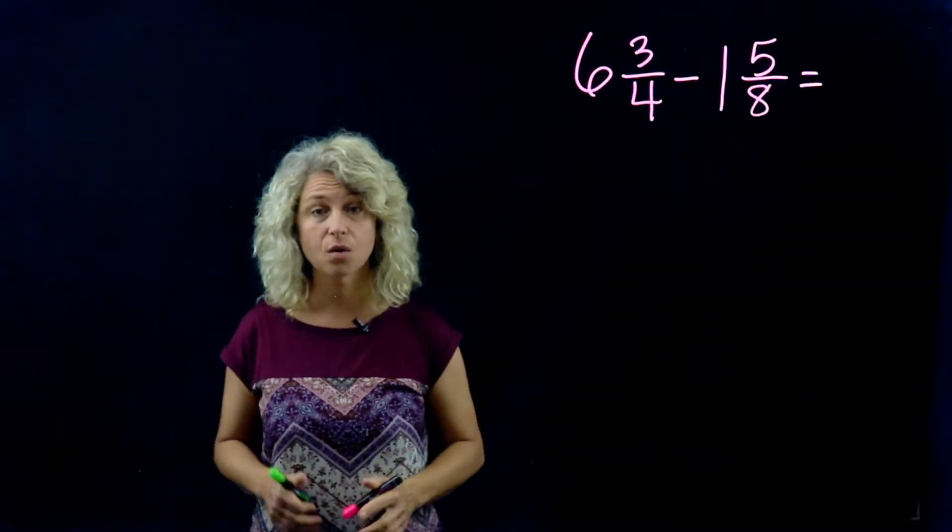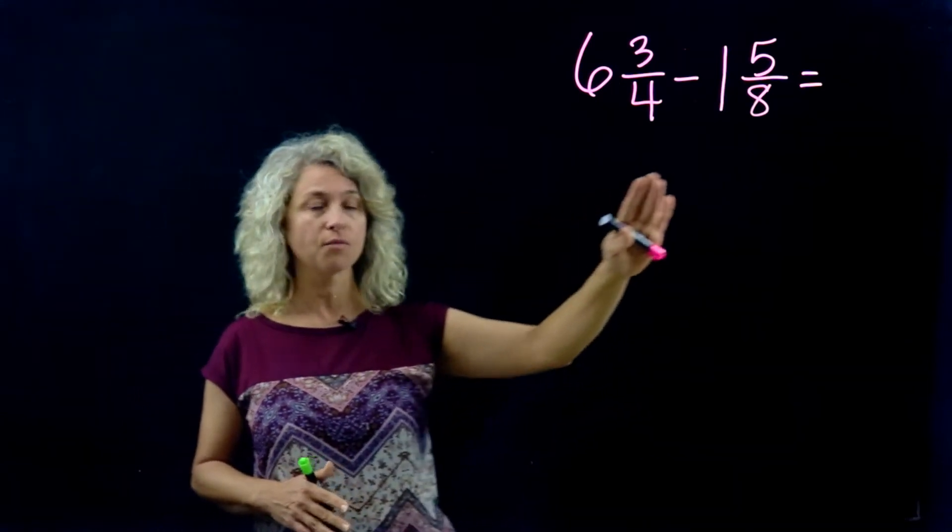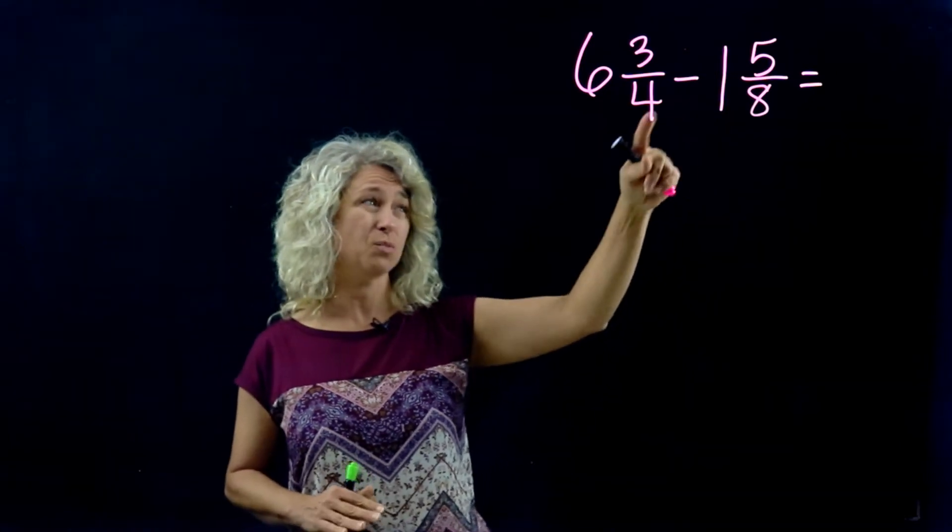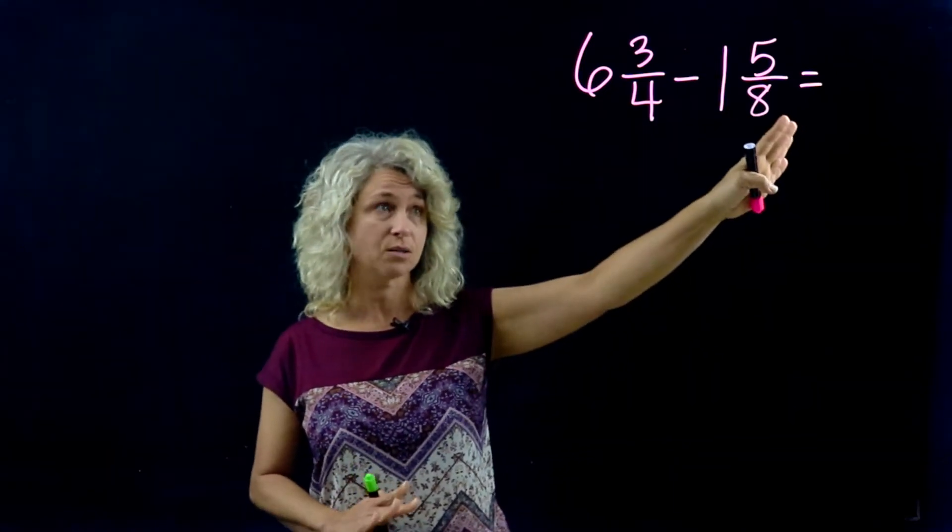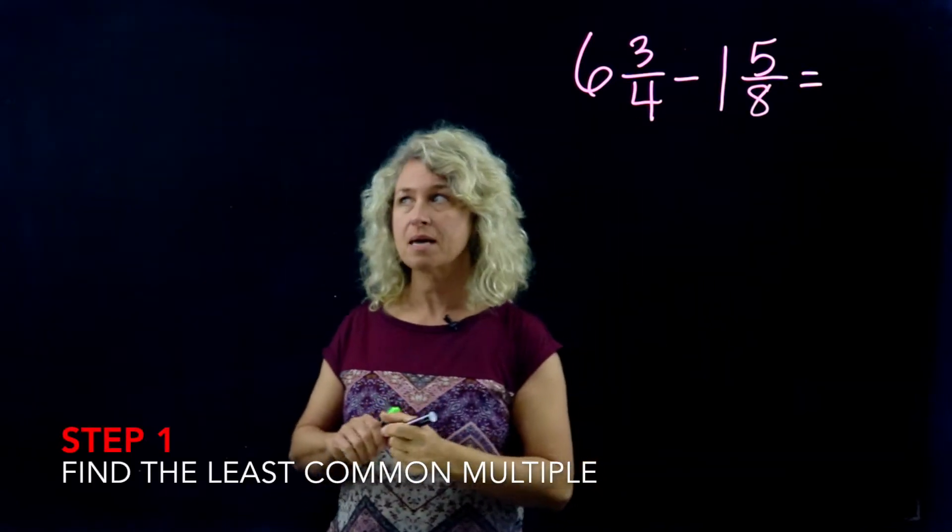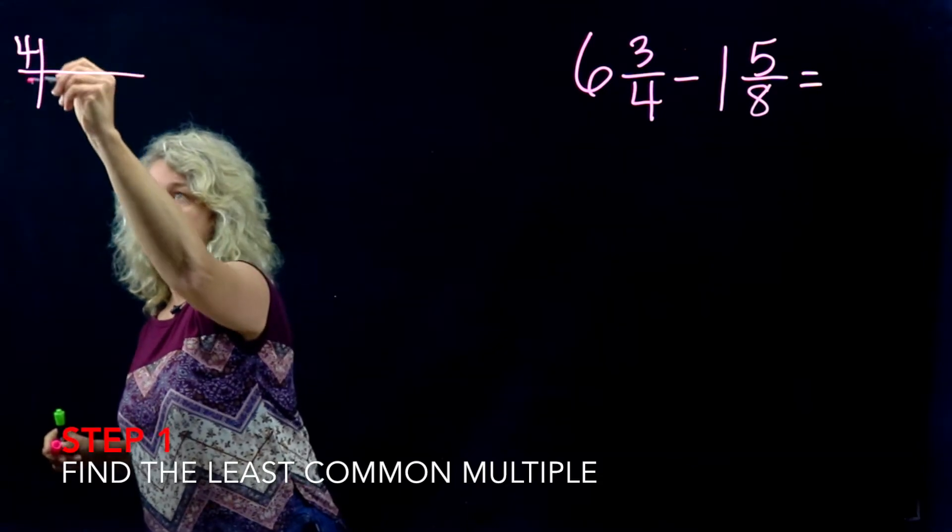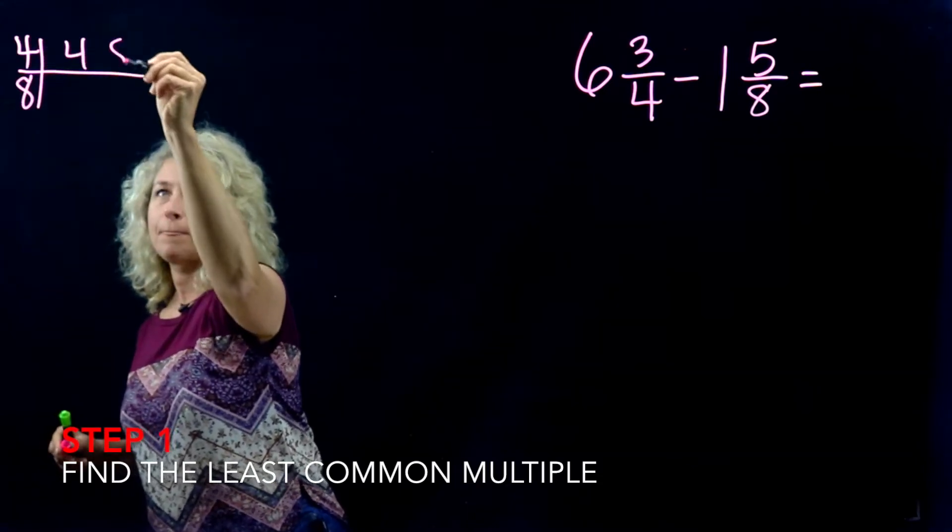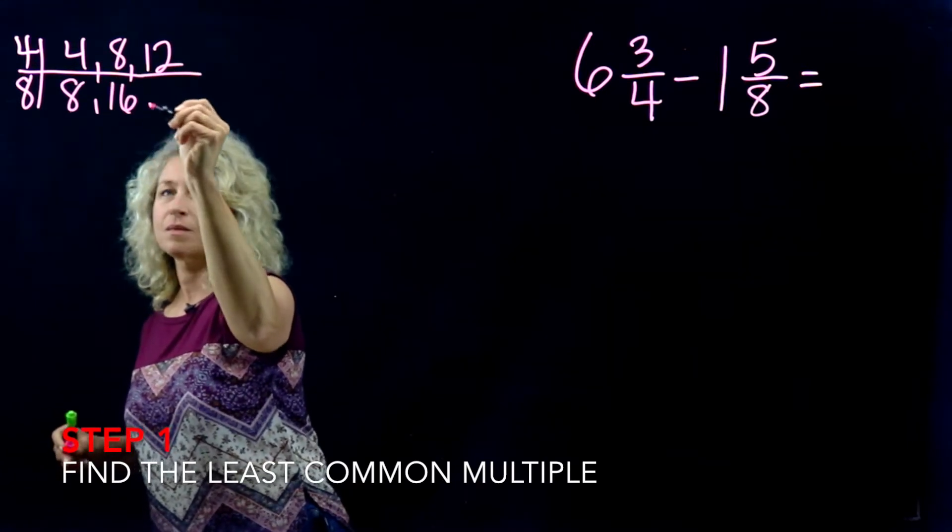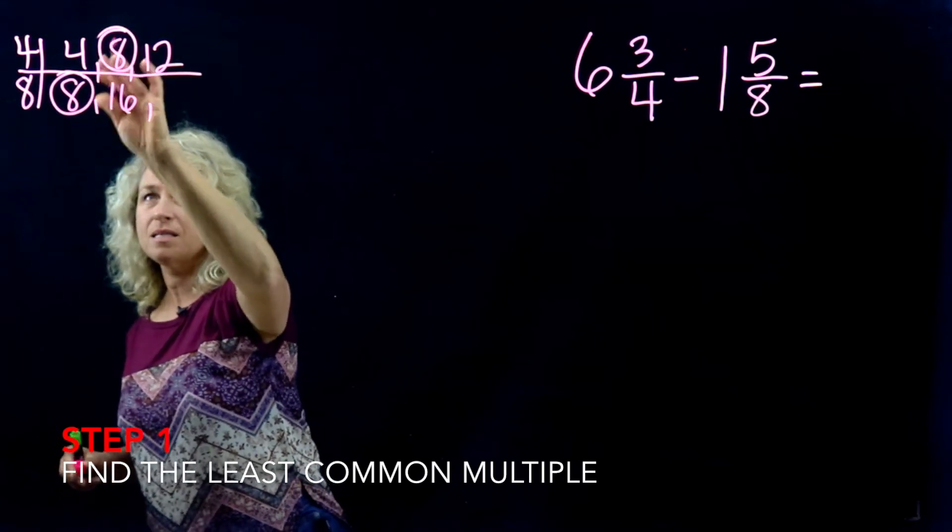In this video we will subtract mixed numbers. Look at our first example. Always evaluate those denominators. If these were both eighths we could just subtract away, but they're not the same, we have to make them the same. So quickly find your LCM. This will be our denominator when we rewrite the problem.